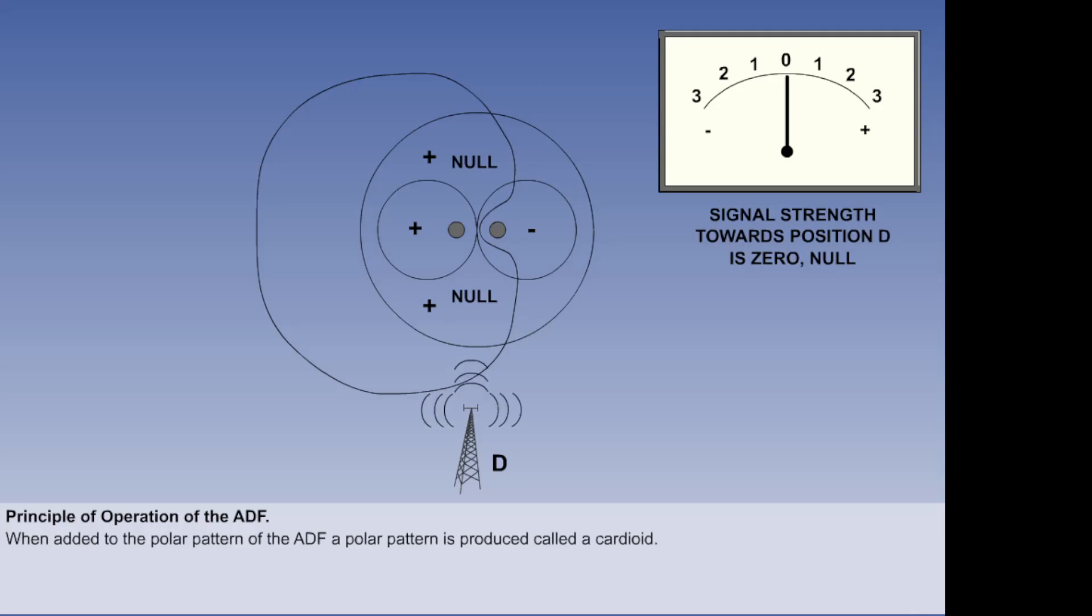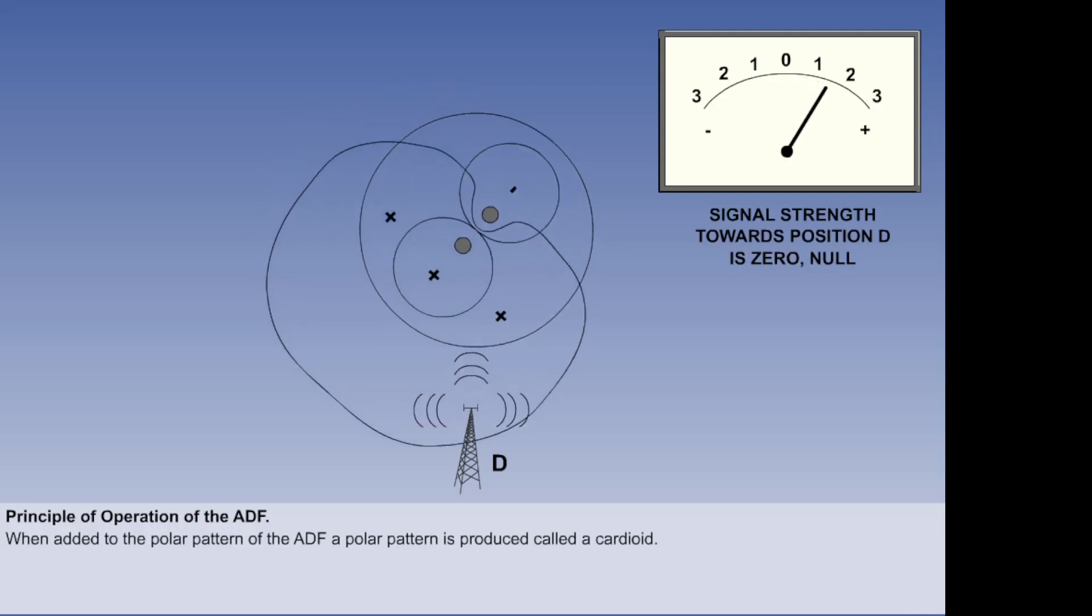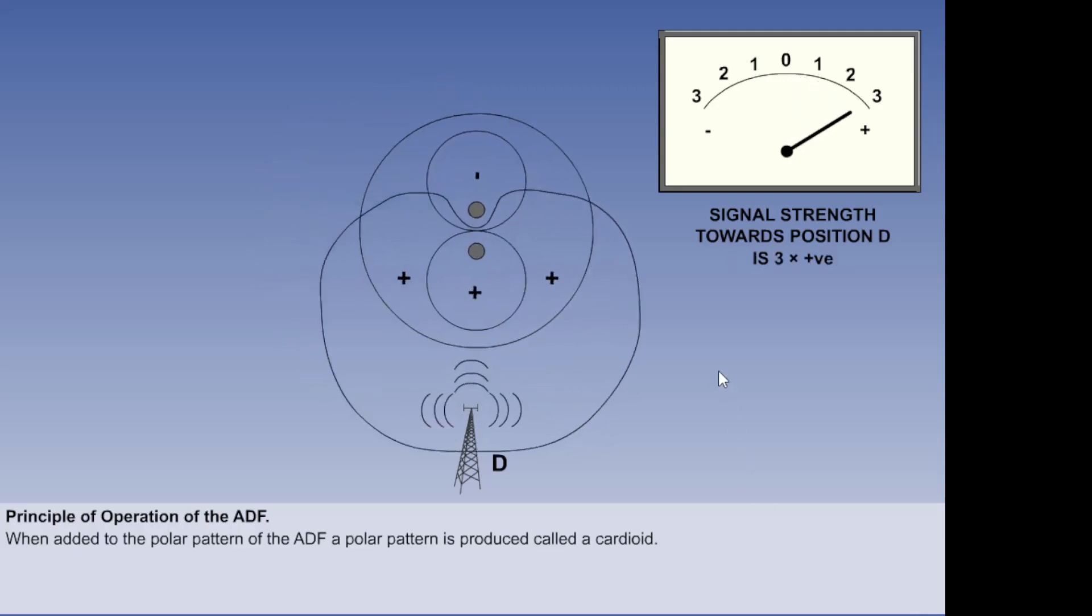If, for example, the transmitter is at position D, the loop antenna senses a null, which means the transmitter is either at D or B. If the loop is rotated anti-clockwise, the combined polar diagram of signal strength will rotate with it, and signal strength will increase, confirming that the beacon is at position D.